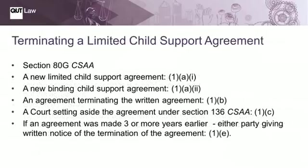Section 80G of the Child Support Assessment Act provides a large number of grounds under which a limited child support agreement can be terminated. The basic ones are: the signing of a new limited child support agreement, the signing of a new binding child support agreement, an agreement between the parties simply terminating the limited child support agreement, the setting aside of an agreement under section 136 of the Child Support Assessment Act, or if the agreement is more than three years old, then simply by one person providing notice to the other of the termination of the agreement and then providing evidence of that notice to the child support agency.